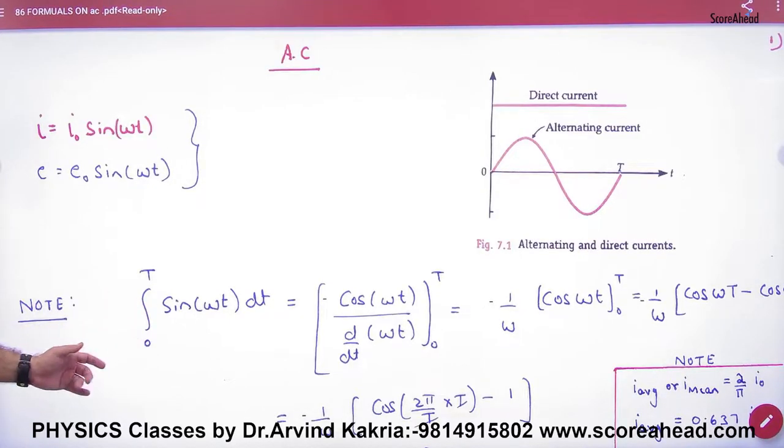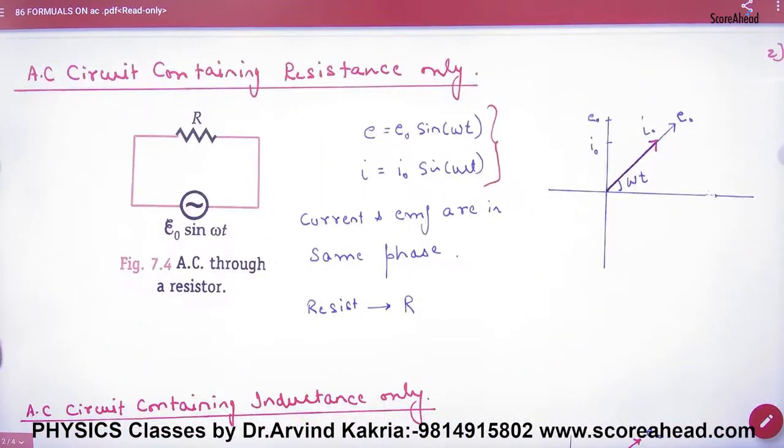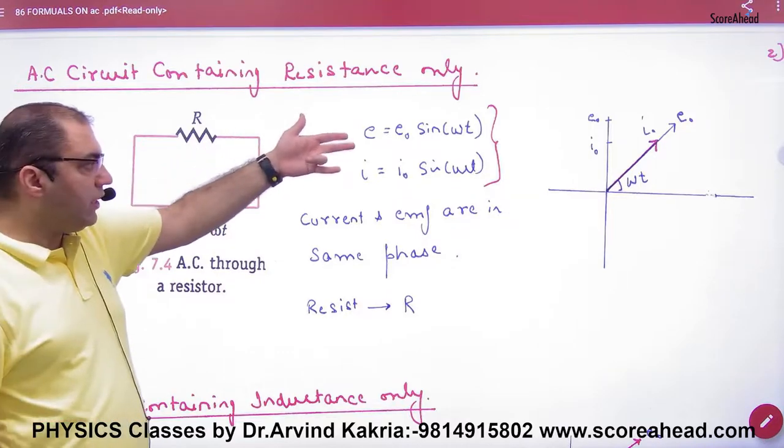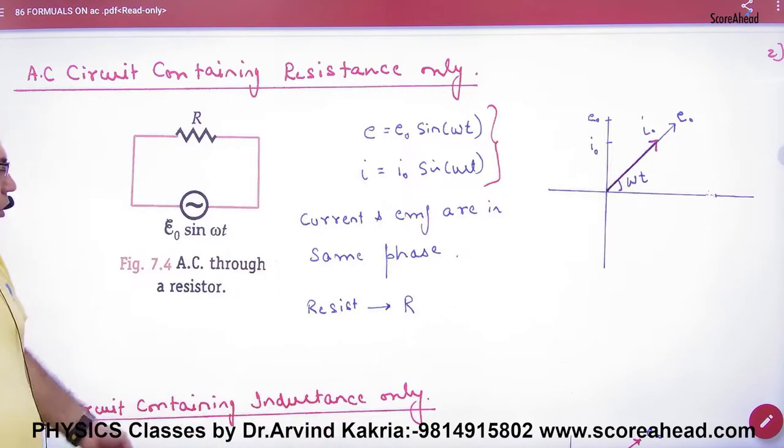We have discussed the average value in AC, so for revision again, there was only resistor in the resistance equation. The current and EMF will remain the same, and the resistance will be R.